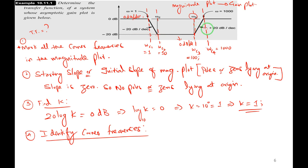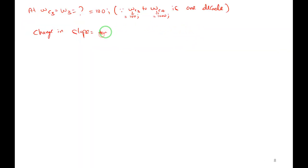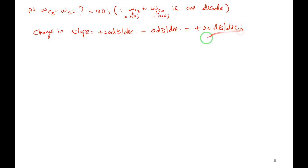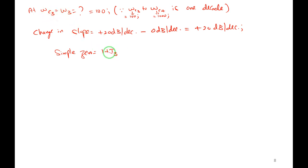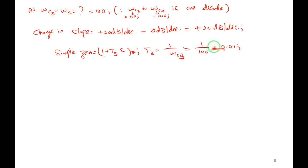Identifying corner frequencies: at ωc1, slope changes from +40 to +20 dB/decade. At ωc2, slope changes from +20 to 0 dB/decade. At ωc3, slope changes from 0 to −20 dB/decade. These are the three corner frequencies. Step 2 for finding K will be done later since the reference line has shifted.